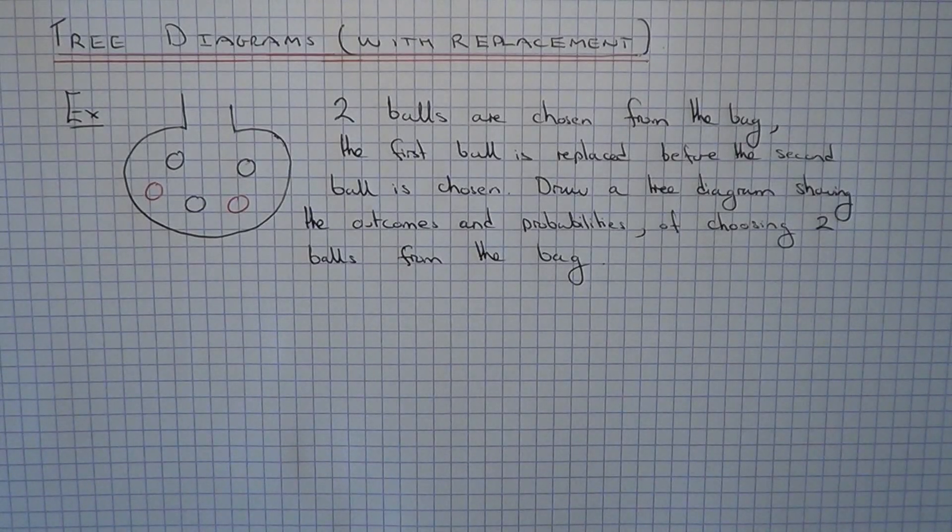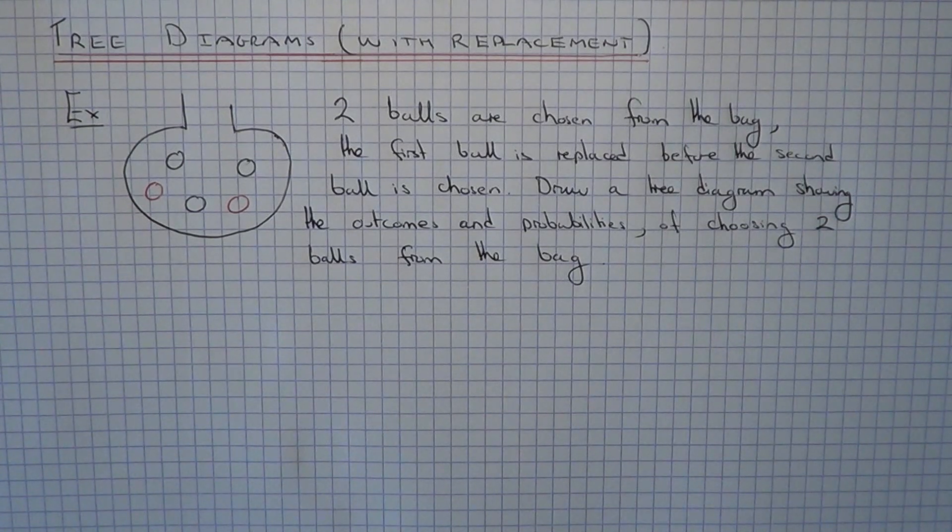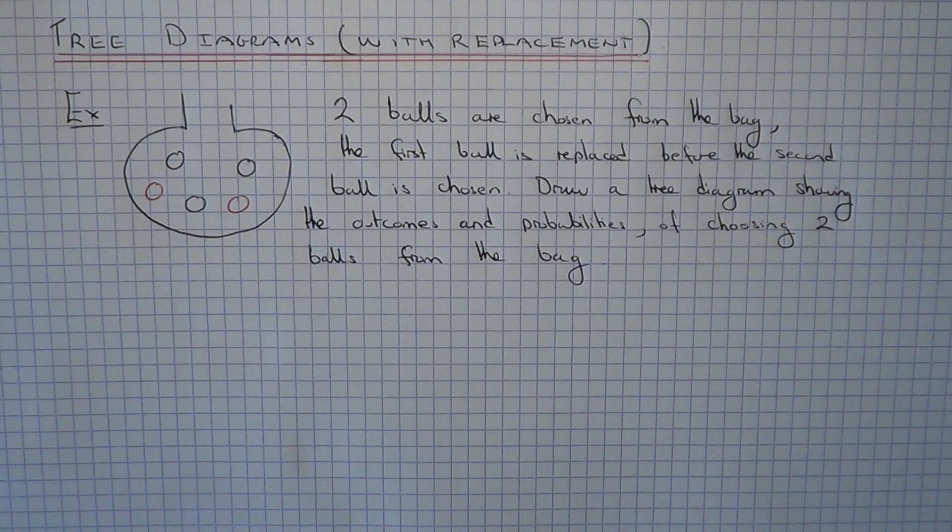Hi, this is Maths3000. Today I'm going to show you how to draw a tree diagram for picking two balls from a bag where the first ball is replaced into the bag before the second one is chosen. This is also known as independent events.